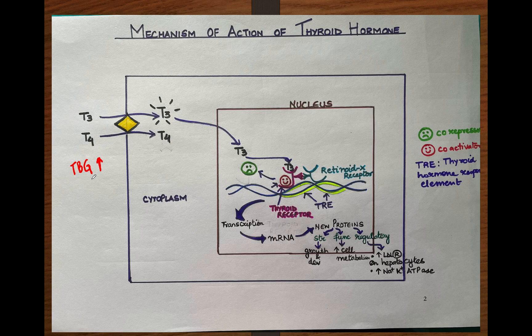But that might not affect the free form, because it is the free form which is usually responsible for the effect — the bound form is not responsible for the actions. Similarly, in certain diseases like cirrhosis of the liver, the level of these plasma proteins may go down and influence the free or bound form of the iodine.